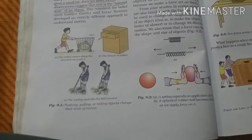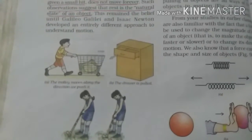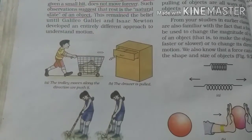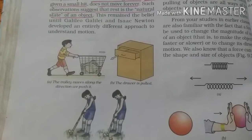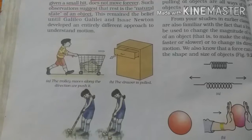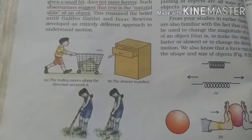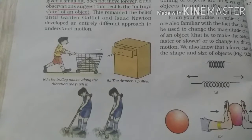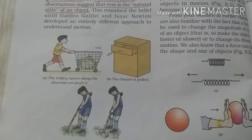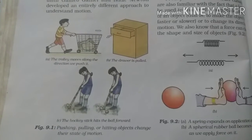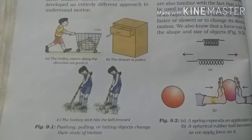I am on page number 114. The trolley moves along the direction we push it. If you are pushing any object, it always moves in the direction of the force. If you are pulling a drawer, pull means towards your side; push means away from you. The drawer is pulled and the hockey stick hits the ball forward. This girl is pushing the ball forward.